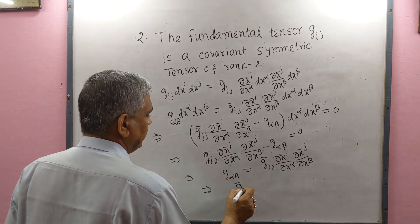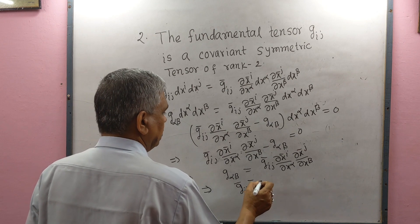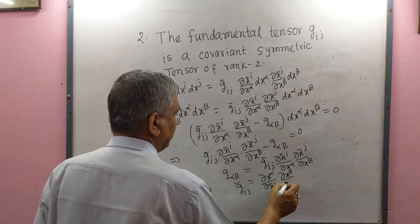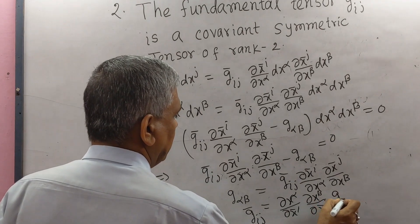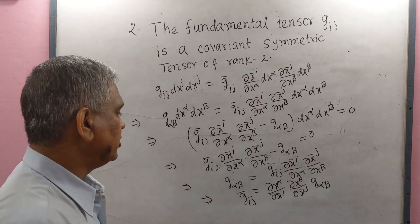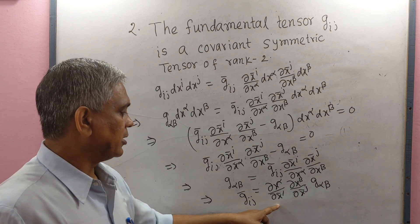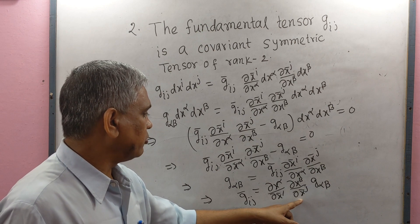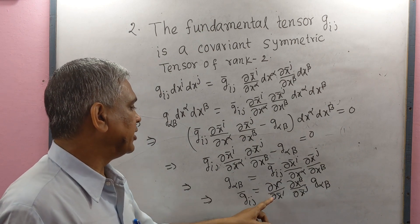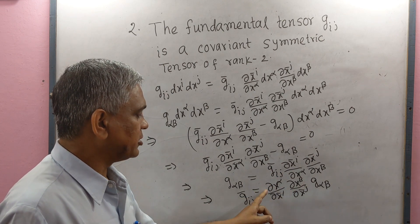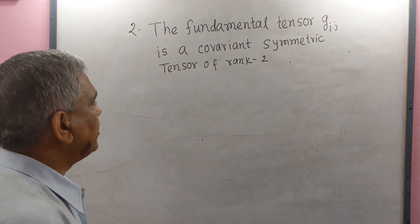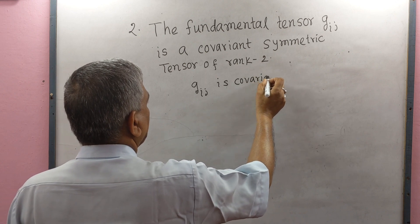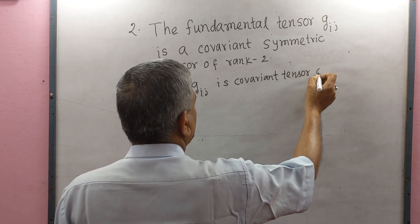This implies: ḡ_IJ = (∂xα/∂x̄I) · (∂xβ/∂x̄J) · g_αβ. Here we see there are two partial derivatives on the right side. Each partial derivative denotes a covariant transformation. Therefore g_IJ is a covariant tensor of rank 2, since there are two partial derivatives.